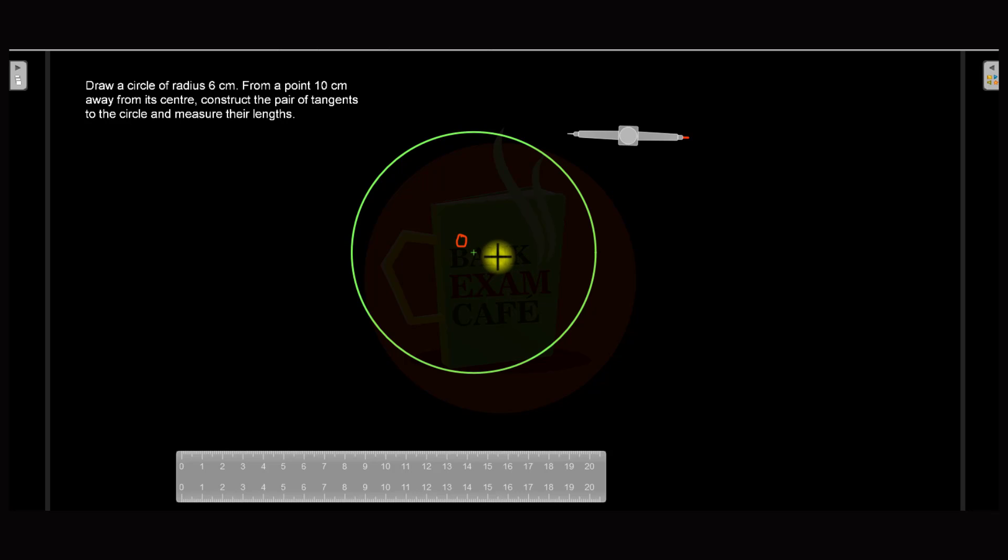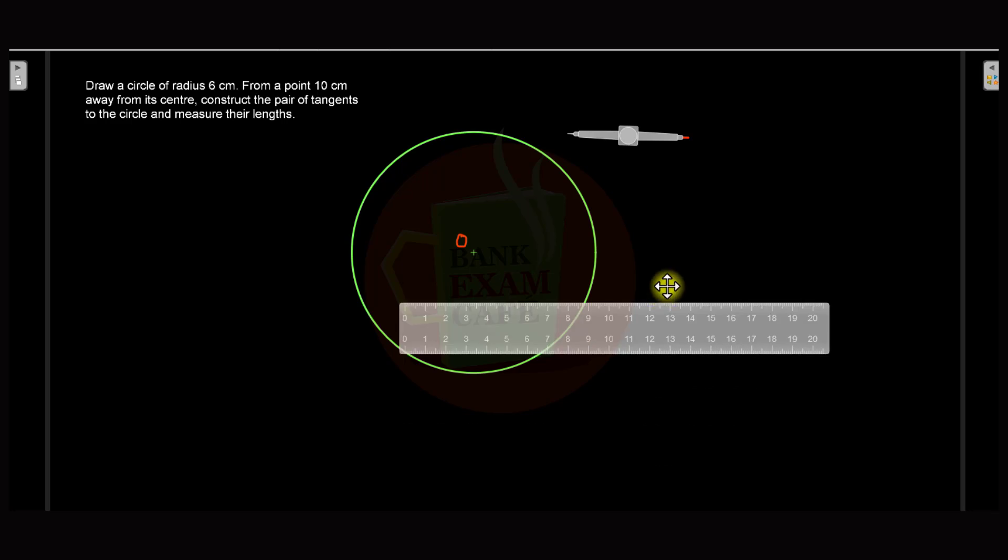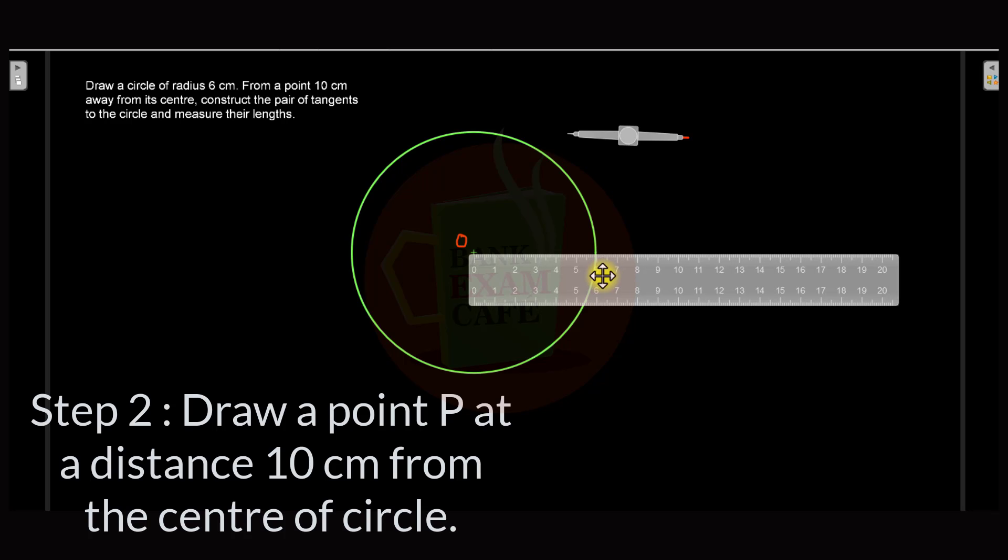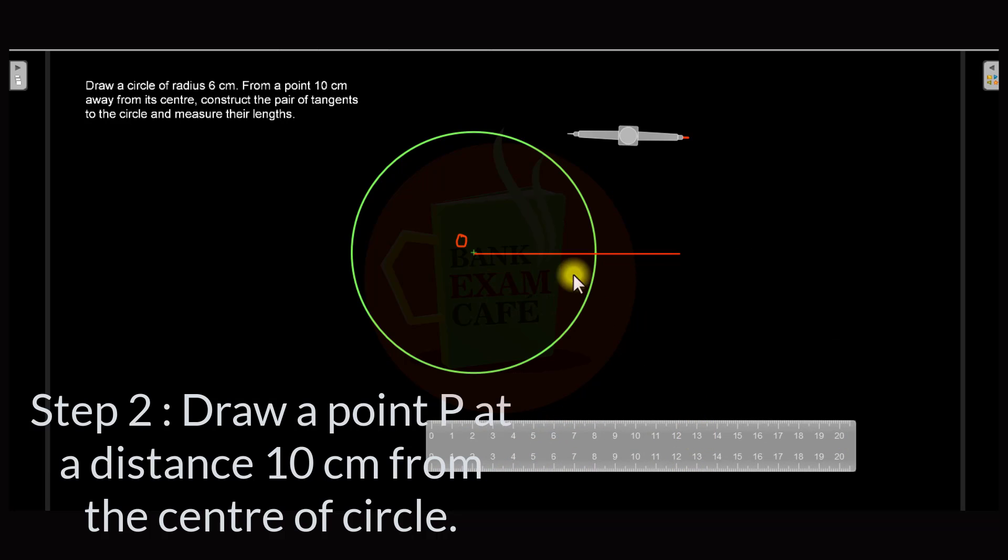Now you have to draw two tangents from a point 10 cm away from the center of the circle, that is point O. So we will take a line segment of length 10 cm from the center of the circle. So this line will be 10 cm. Now here let this point be P point. So this is point P, and from this point P you have to draw two tangents to the circle.